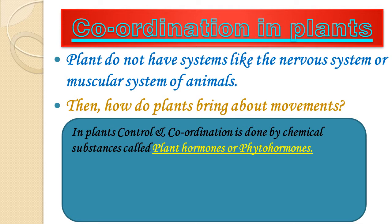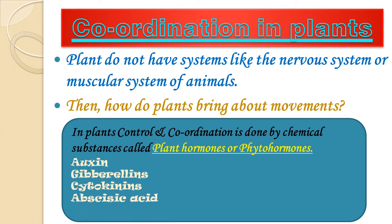In plants, control and coordination is done by chemical substances called plant hormones or phytohormones. For the coordination, control, and growth of the plant, different hormones are present. These include auxin, gibberellins, cytokinins, abscisic acid, and ethylene — all with different functions.